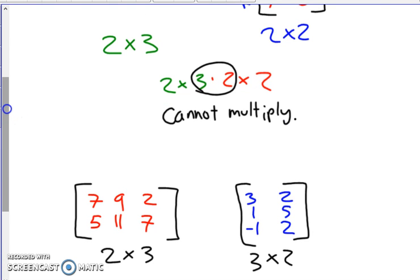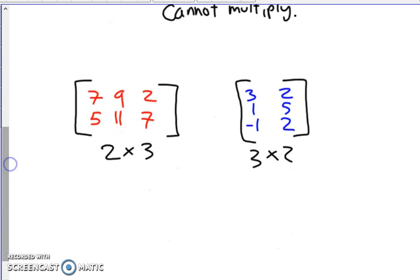Now let's look at an example where you can multiply two matrices. So if you look at that two by three matrix there, and if we take this three by two matrix, since those inner numbers are the same, you are allowed to multiply these two matrices.